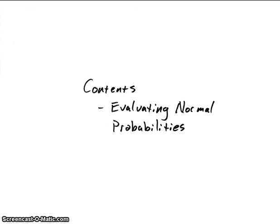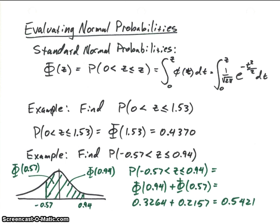In this video, we're going to look at how to evaluate normal probabilities, or Gaussian random variable probabilities. Remember, we have the standard normal distribution function. We're going to use it to calculate our probabilities. Our standard normal random variable was equal to X minus its mean, all divided by the variance.